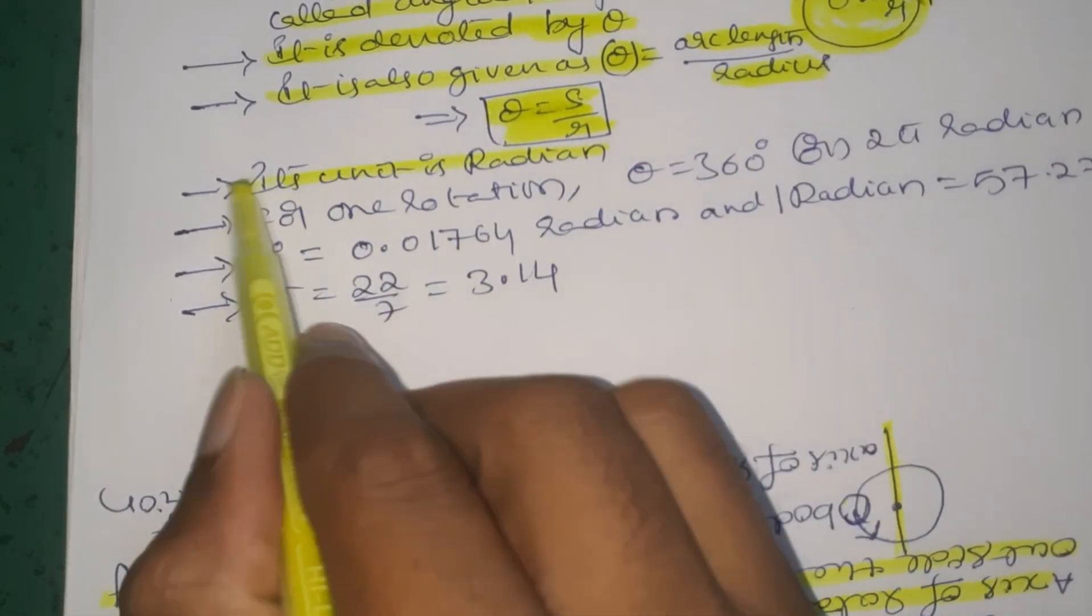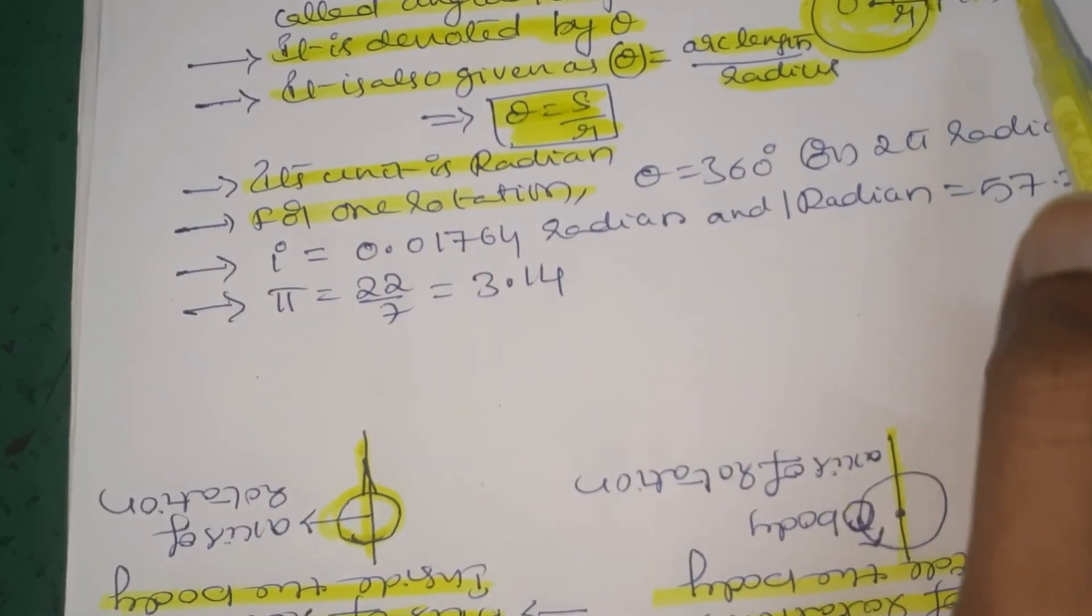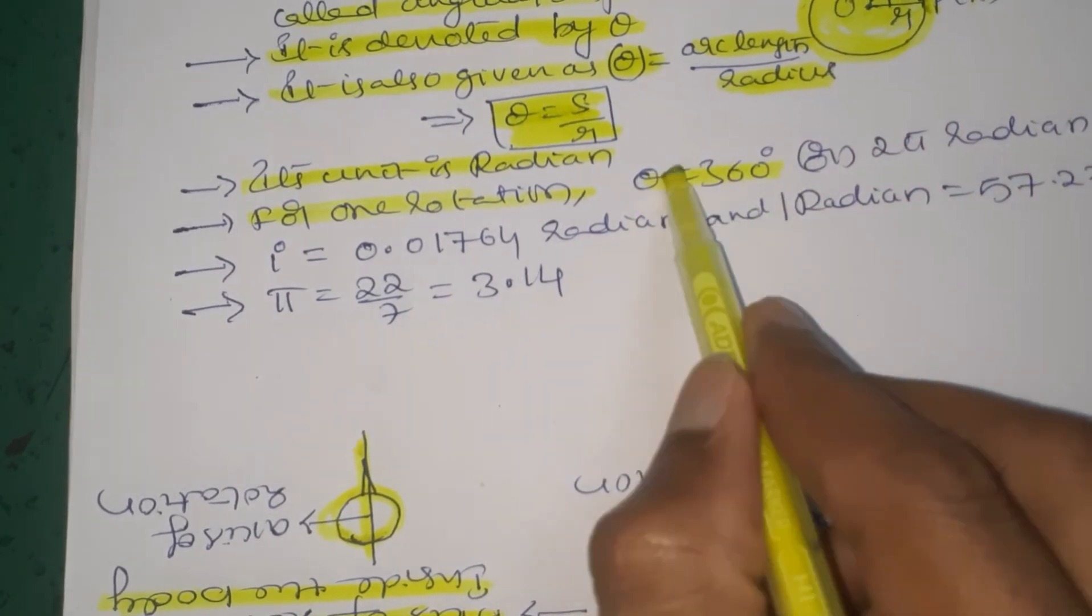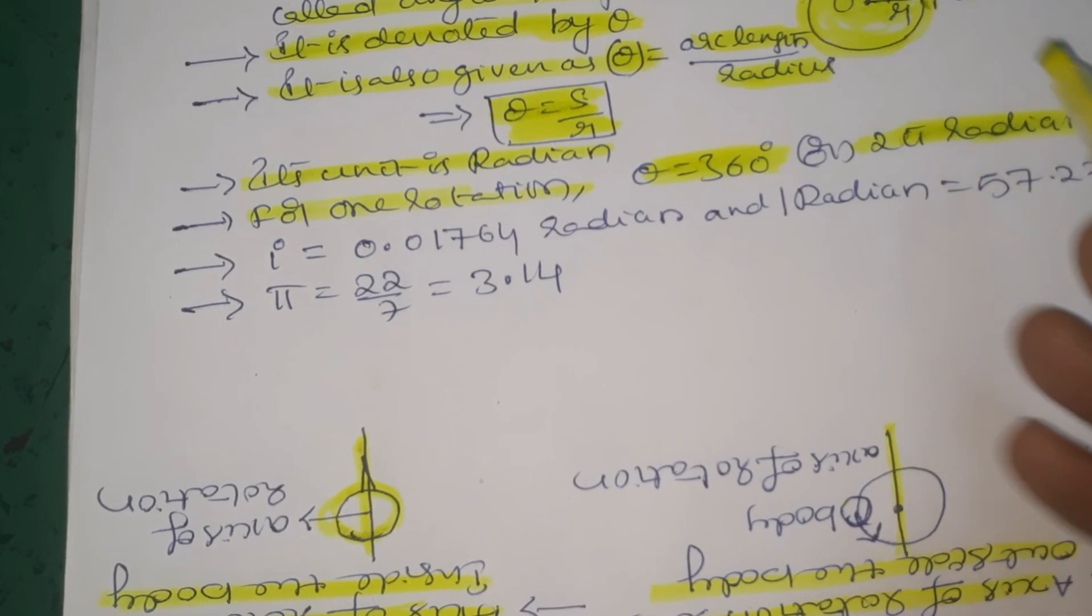The unit is radian. When the particle completes a full rotation around the circle, the angular displacement is 360 degrees or 2 pi radians.